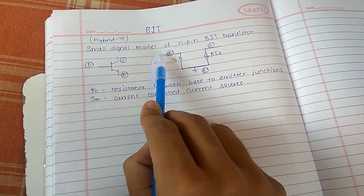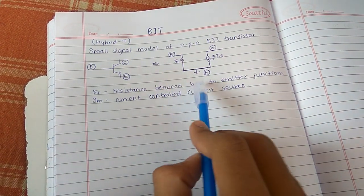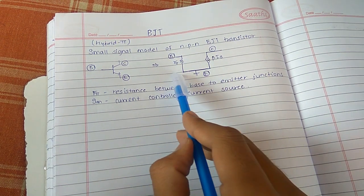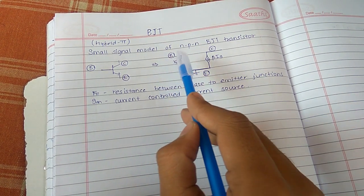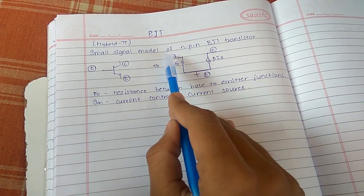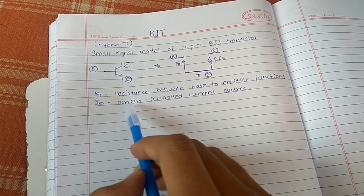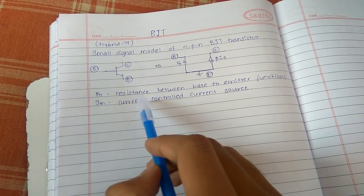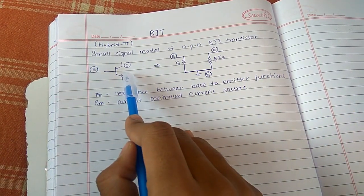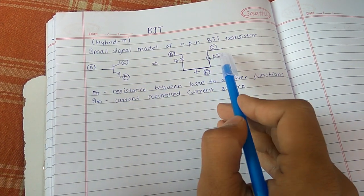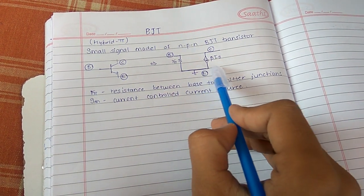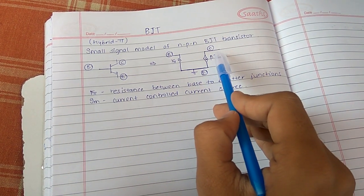This is the base junction and this is the emitter junction. Between these two junctions, a resistor Rpi is drawn. So this is the resistance between base and emitter, where the drop of 0.7 volt or more than that takes place, and the transistor comes into the on condition.